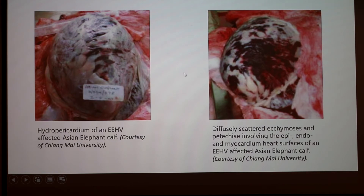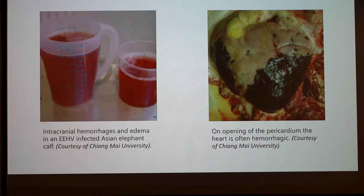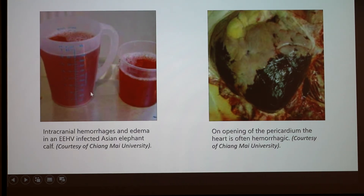This picture shows the heart with hydropericardium of an EEHV-affected Asian elephant, with blood clots occurring on the epi-, endo-, and myocardium surfaces. This image shows intracranial hemorrhages and edema in an infected Asian elephant. When the pericardium was opened, extensive hemorrhaging was visible. The hydropericardium yielded several hundred milliliters of intracranial hemorrhagic fluid that was pulled out.